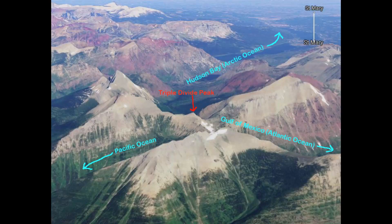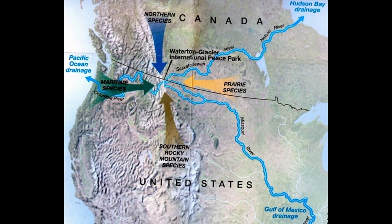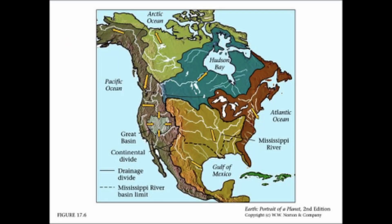Interestingly, a third drainage near the Montana-Canadian border moves water north from Montana's Glacier National Park to Canada's Hudson Bay and then east to the North Atlantic Ocean.